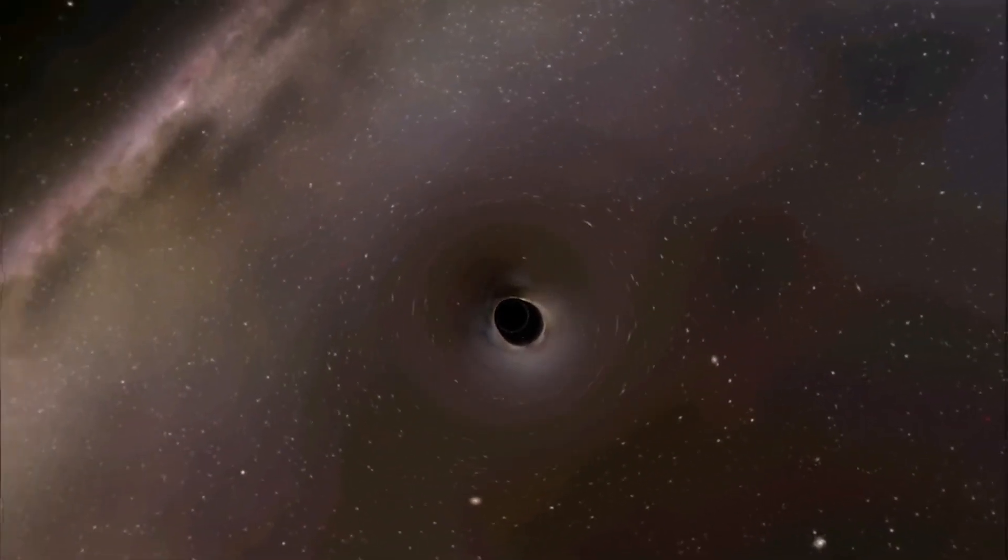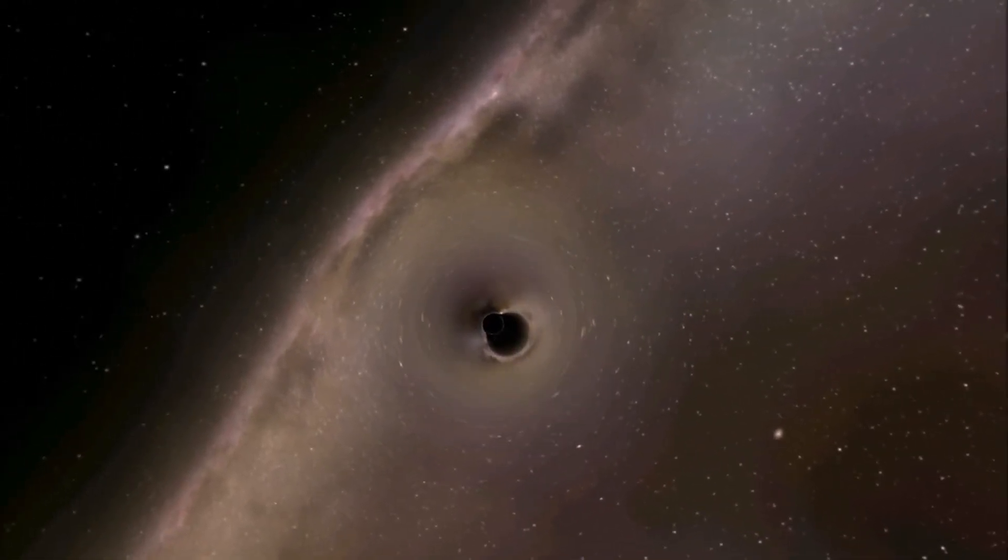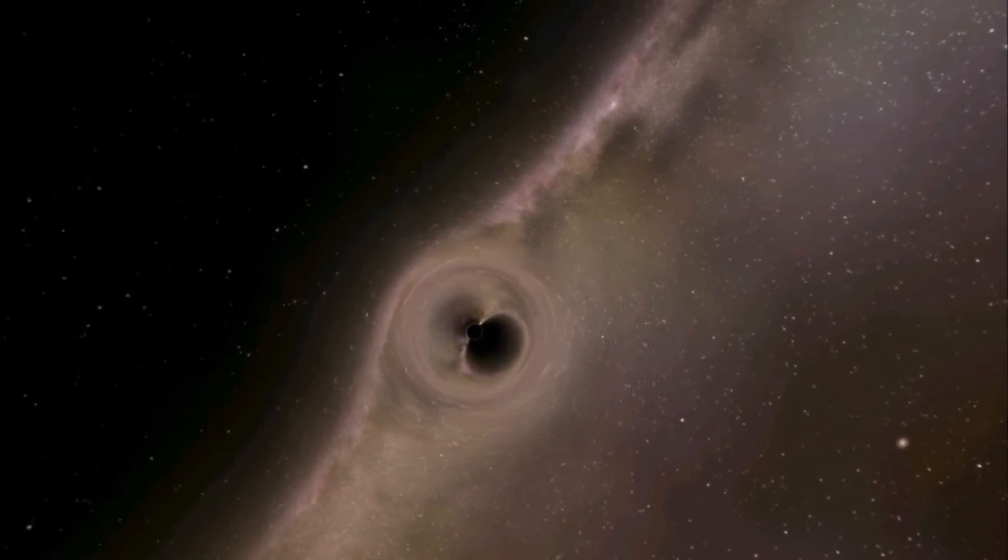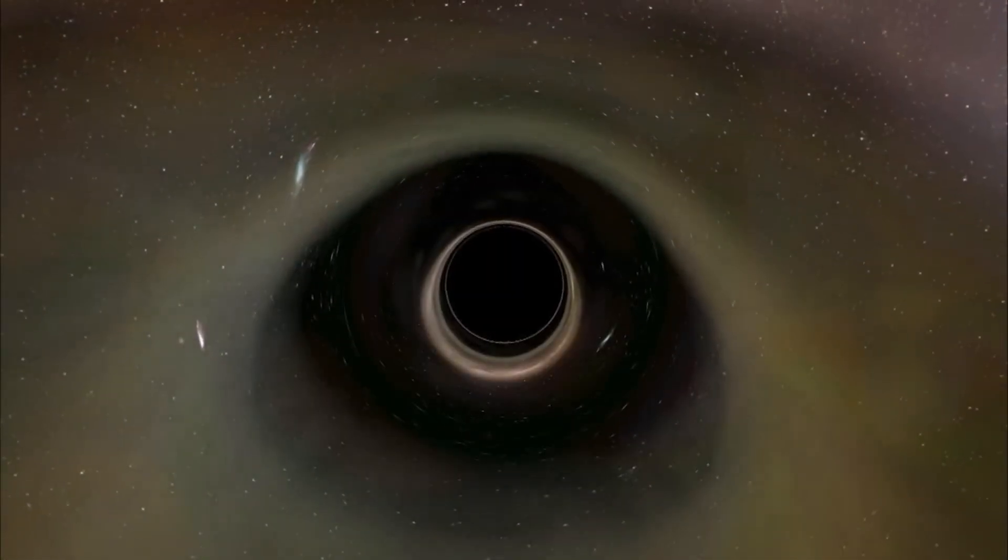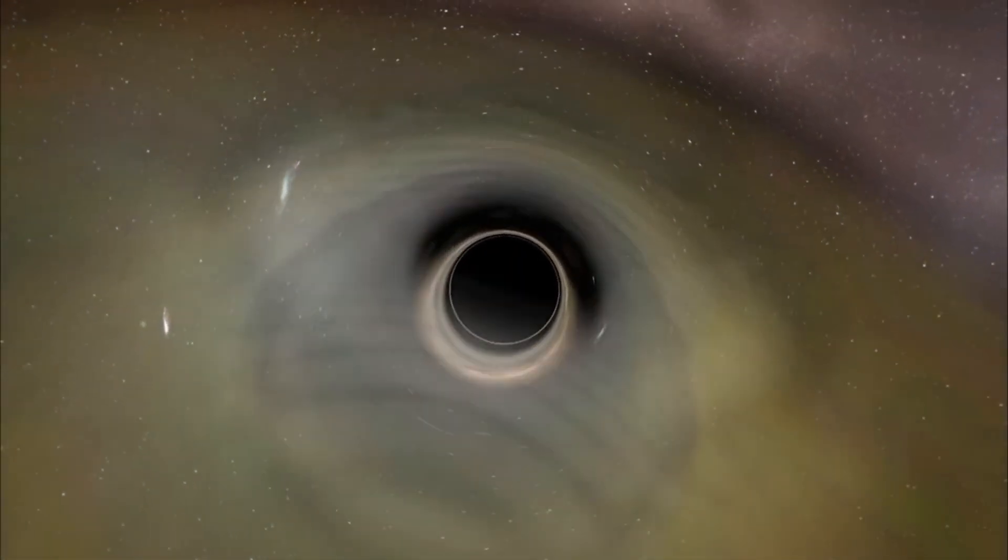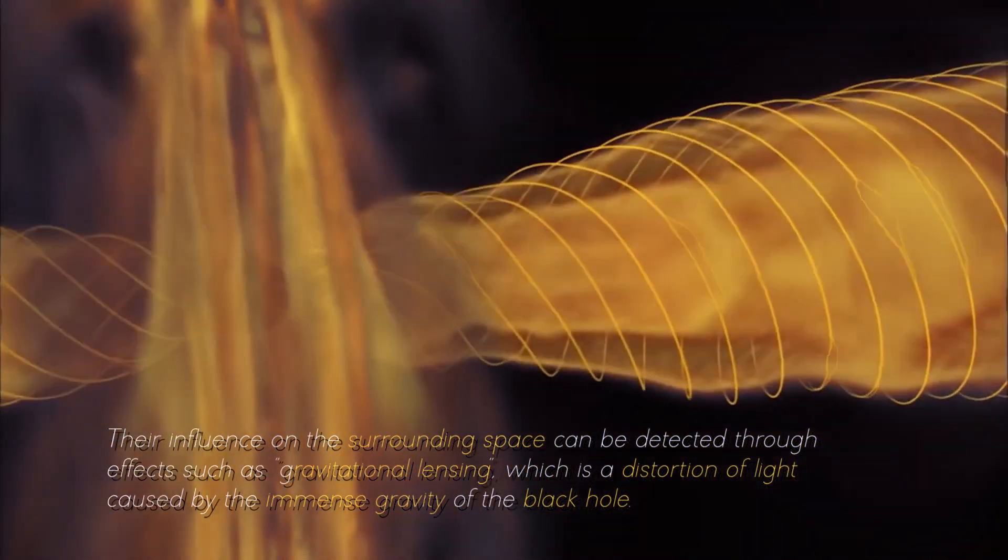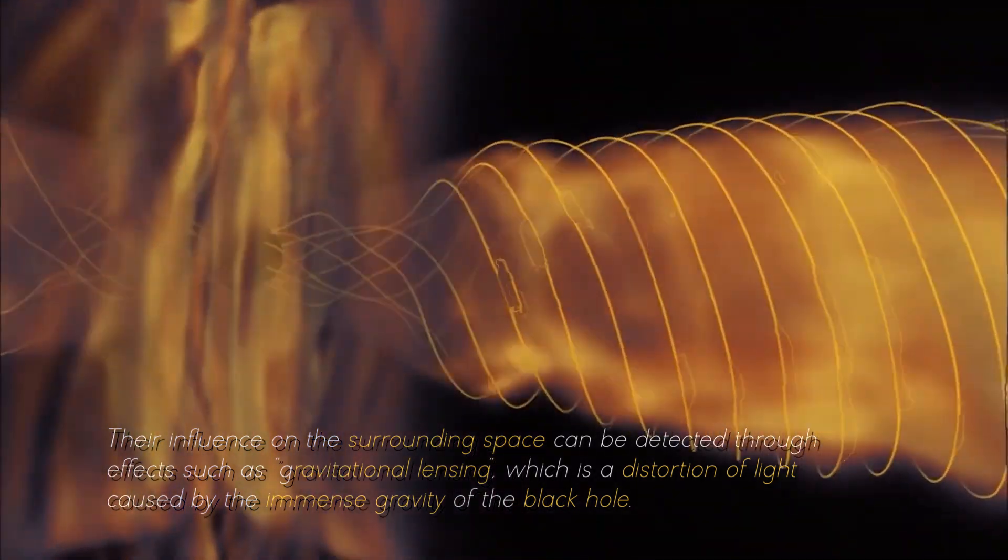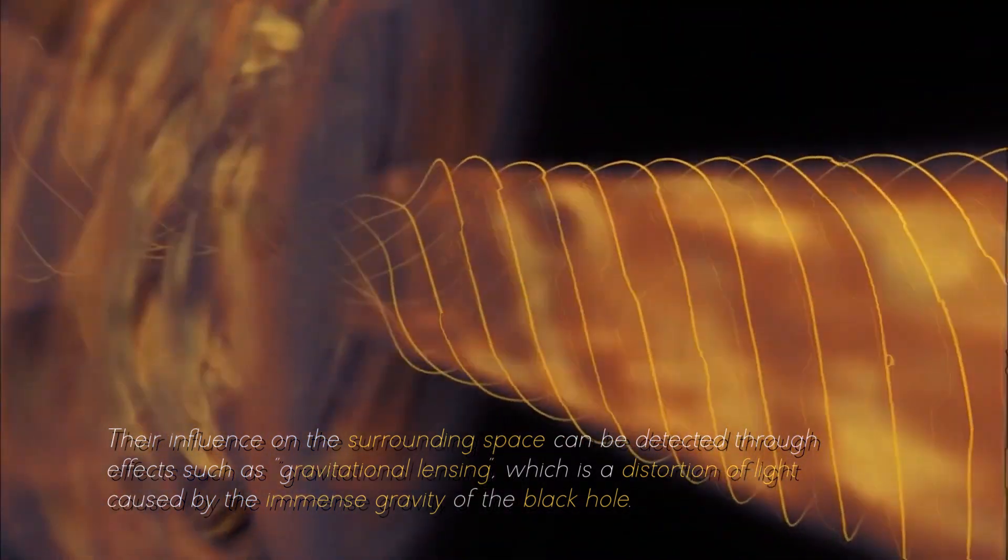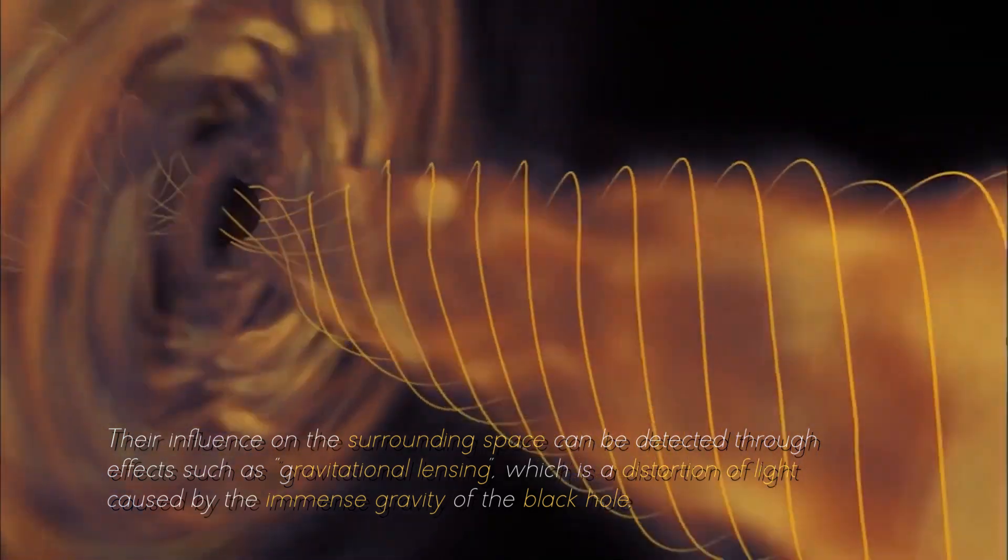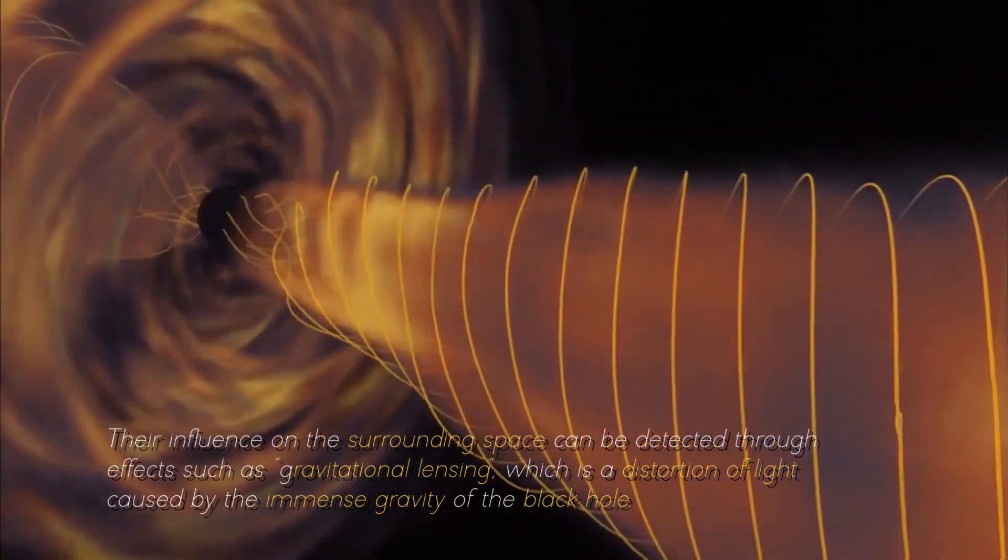The presence of an event horizon around black holes is what makes their direct study difficult, but this does not mean that it is completely impossible. Their influence on the surrounding space can be detected through effects such as gravitational lensing, which is a distortion of light caused by the immense gravity of the black hole.